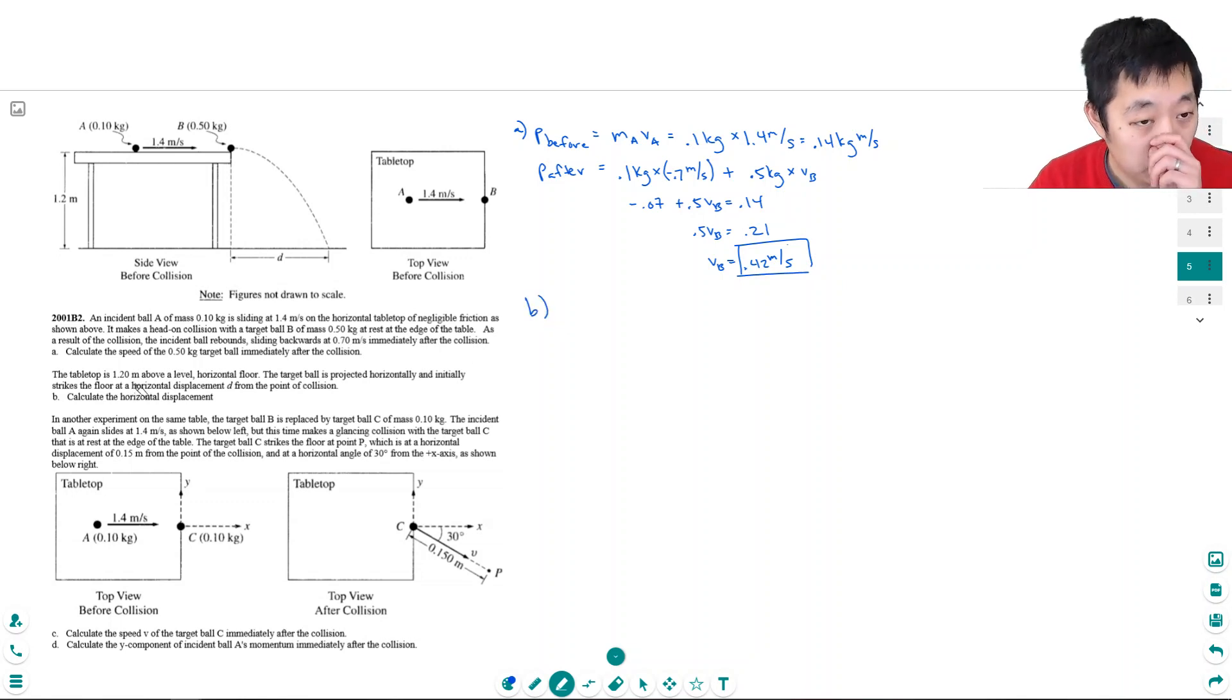The tabletop is 1.2 meters above the horizontal floor. The target ball is projected horizontally and initially strikes the floor at a displacement d from the point of collision. Calculate the horizontal displacement. If it's going with this velocity, 0.42 meters per second, then d equals 0.42 meters per second times the time it's in the air.